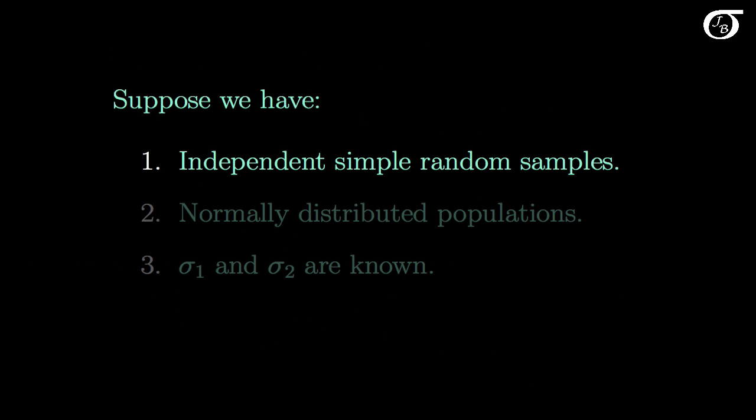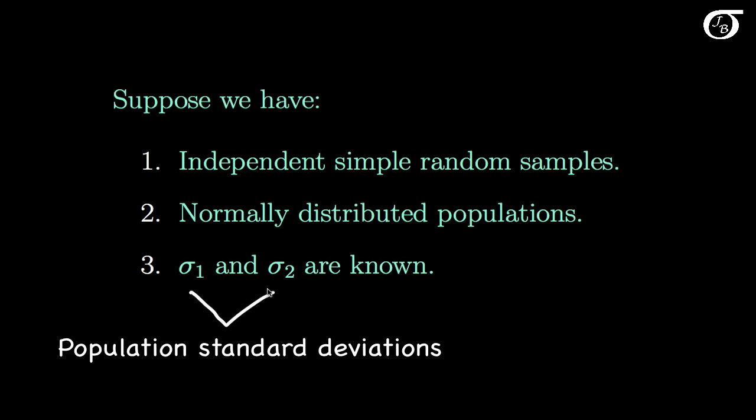Suppose we have independent simple random samples from the populations of interest, we have normally distributed populations, and that the population standard deviations sigma 1 and sigma 2 are known. We're not usually going to know the population standard deviations, but play along for now.